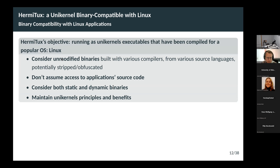We consider unmodified binaries that can be built with various compilers from various source languages — they can be stripped or obfuscated, and we do not assume access to the application source code. We consider all types of binaries: dynamically linked binaries but also static binaries. Something very important is that we want to maintain unikernel principles and benefits: a single address space VM, lightweight, secure, fast system calls, and so on.